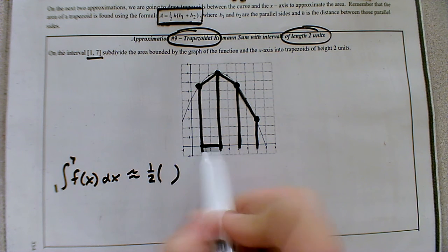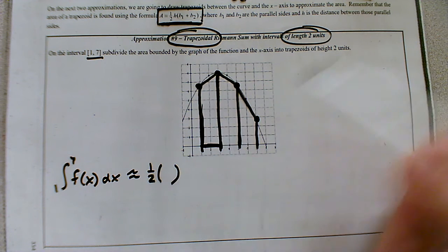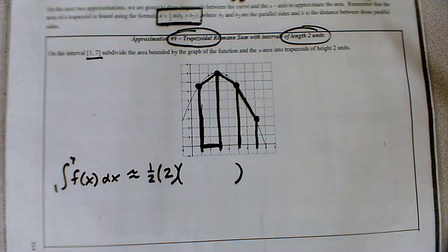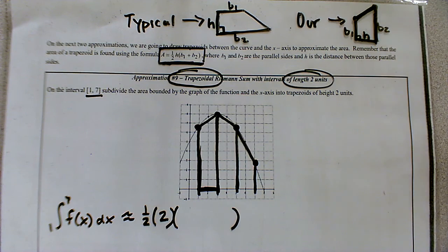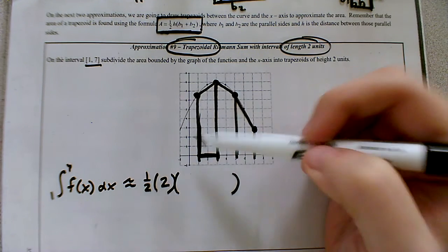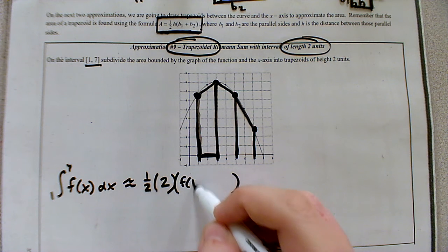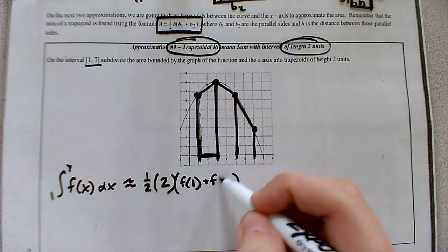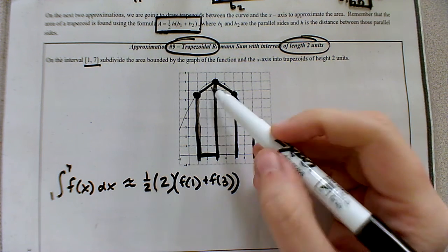Again, the height is now actually a horizontal distance, the distance between the parallel bases. So this distance was actually two units. And then we need the sum of the bases. So in our trapezoid that we listed at the top here, notice how the bases are actually the lines that you draw up to the curve. So this first line would be the height of the curve at the x value of one. And then the second base that we drew up is the height of the curve at three. Okay, so here's our area formula to represent our first trapezoid.